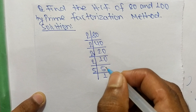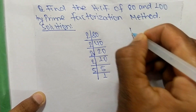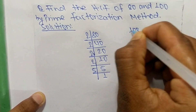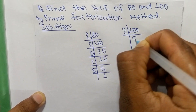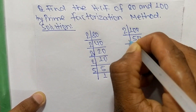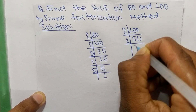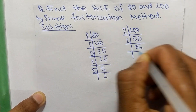Now the prime factors of 100: it is 2 times 50 makes 100, 2 times 25 makes 50.